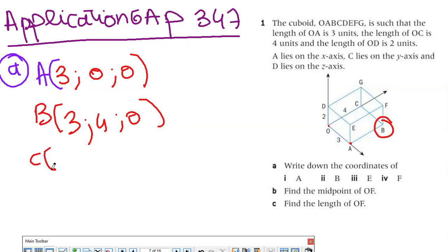If I want to find C, where is C? C is on the Y axis, so X is zero and Z is zero. The distance from O to C is 4 units, so it's (0,4,0). D is on the Z axis, so X is zero and Y is zero. The distance between O and D is 2, so D is (0,0,2).